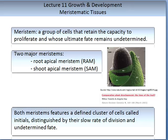The meristem is a term we use often in this subject. It refers to a group of cells that retain the capacity to proliferate but whose fate is undetermined. There are two major meristems: the root apical meristem and the shoot apical meristem. Both have features of a defined cluster of cells called initials, distinguished by their slow rate of division and undetermined fate. The image on this slide is a scanning electron micrograph of a young maize apex, showing the shoot apical meristem at the top and in green the youngest leaf primordia, or plastochronin P1 and P2.